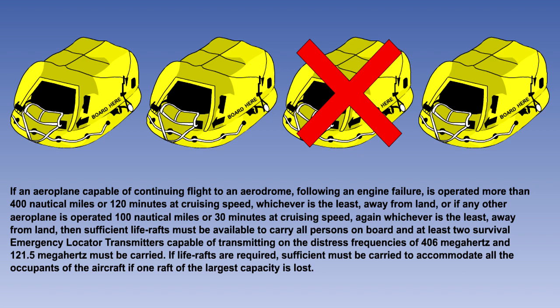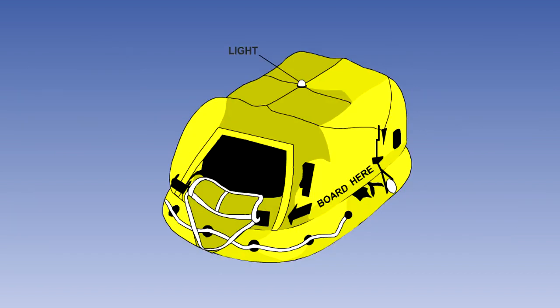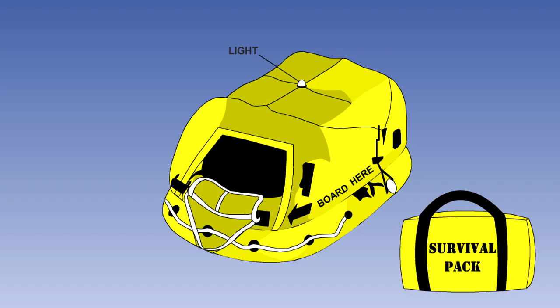If life rafts are required, sufficient must be carried to accommodate all the occupants of the aircraft if one raft of the largest capacity is lost. Each life raft must be equipped with a survival locator light and sufficient life-saving equipment and means of sustaining life as appropriate to the flight to be undertaken. The equipment is carried in a survival pack stowed in the raft.